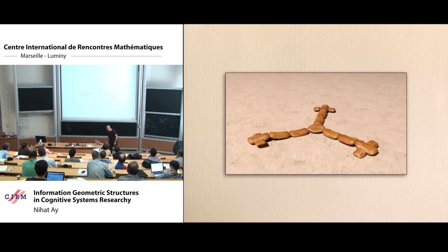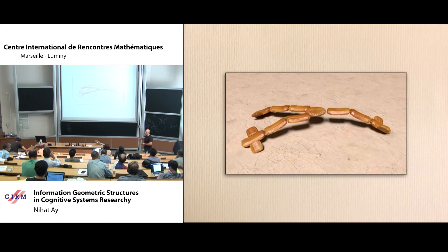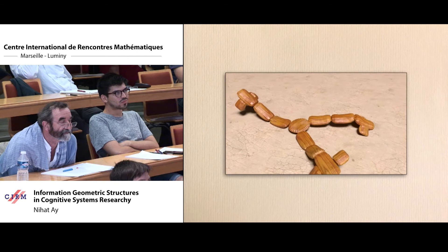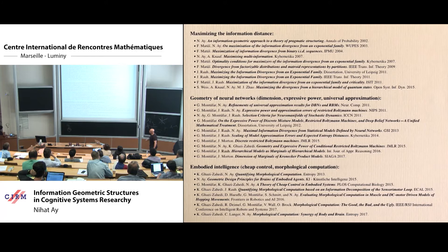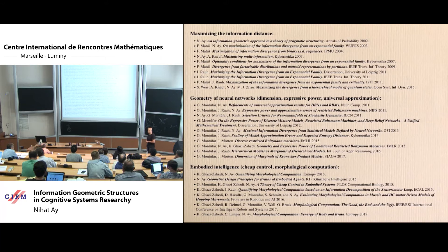Let me finish by listing relevant papers: works on the information distance maximization problem, the geometry of restricted Boltzmann machines mainly by Guido Montúfar, and works on embodied intelligence. I also want to mention Kian Ghazi Zahedi at the Santa Fe Institute, who does virtual robotics and studies morphological computation. Thank you very much.